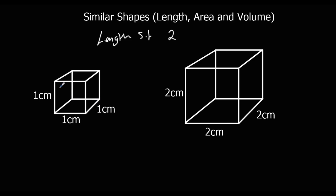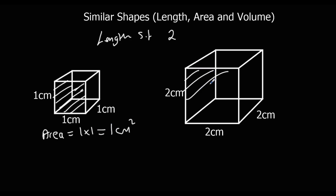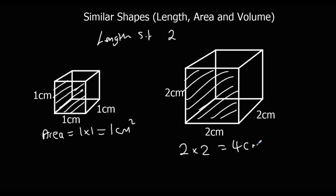For area, consider the area of the face. The area of the front of the small shape is 1 times 1, which is 1 centimetre squared. But the area of the front of the large shape is 2 times 2, which is 4 centimetres squared. So the area scale factor is 2 squared, which is 4.